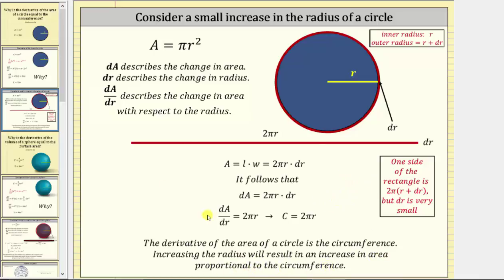I do want to mention this is an informal discussion as to why the derivative equals the circumference. If we go back to the original circle, when determining the area of the red ring, there is really an inner radius and an outer radius, where the inner radius is r and the outer radius is r plus differential r. Therefore, when we cut the ring and unroll it to form the rectangle, one length is two pi r, but the other length is really two pi times the quantity r plus differential r. But because differential r is very, very small, we treat the two opposite sides of the rectangle as two pi r to determine the area of the ring.